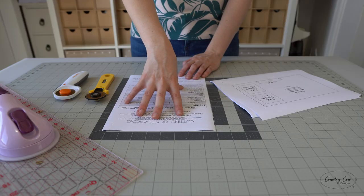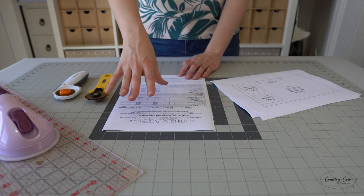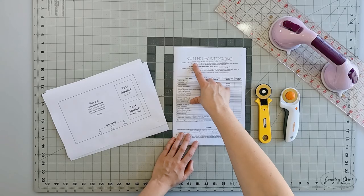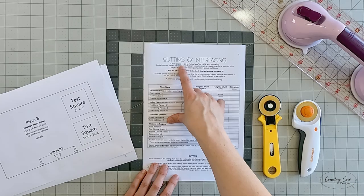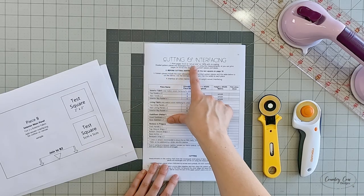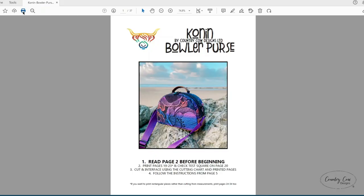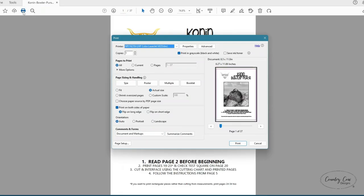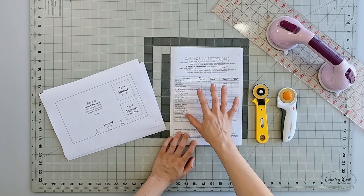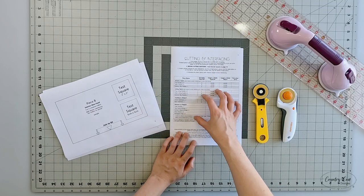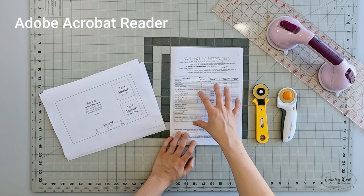The cutting chart is always at the end of the instructions so everything you need to print is all together. This tells you to print pages 16 to 23 at actual size or 100% with no scaling. That means when you're printing it, you need to make sure it's not scaling to fit and that it's not printing a different percentage.